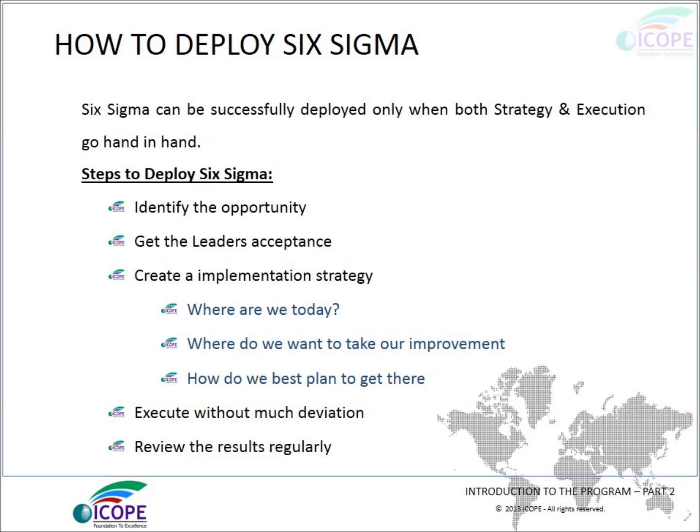How to deploy Six Sigma? Six Sigma can be successfully deployed only when both strategy and execution go hand in hand. Steps to deploy Six Sigma: identify the opportunity, get the leader's acceptance, create an implementation strategy — where are we today, where do we take our improvement, and how do we best plan to get there?